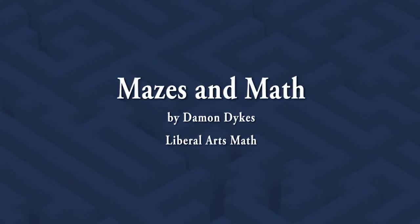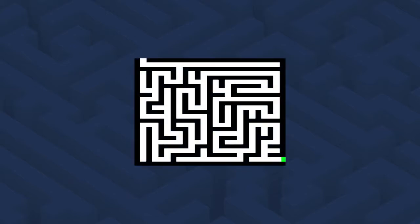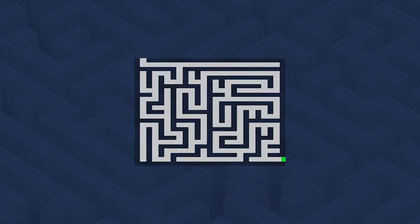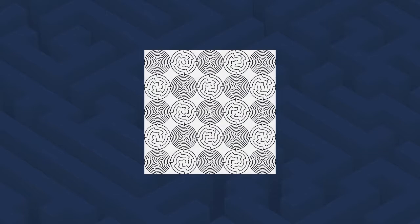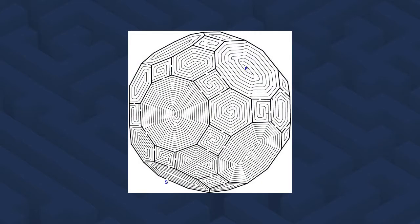Mazes and Math by Damon Dykes. The maze is easily one of the most ubiquitous types of puzzles as a form of entertainment and mental stimulation, and has been a part of our human history for at least 4,000 years. Mazes and labyrinths have been constructed as monuments, sacred symbols, and garden ornamentation by earlier civilizations, and are still used today by our culture in numerous ways.